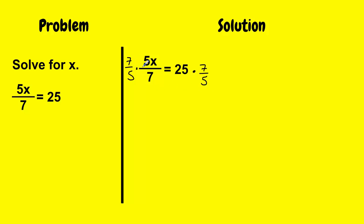When I multiply the reciprocals, I get 7 times 5 is 35x over 5 times 7, which is 35. And that's going to equal, I have to multiply these two out, so I'm going to represent the 25 as a fraction. And now,